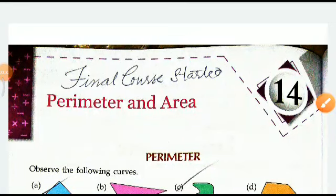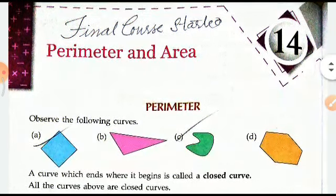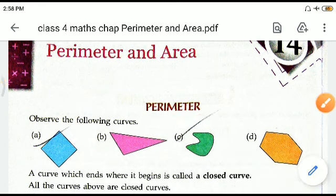Good morning children, I welcome you all to this session of maths. We are on to the chapter Perimeter and Area. Now see children, perimeter is the sum total of the boundary. Observe the following curves. A curve which ends where it begins is called a closed curve.